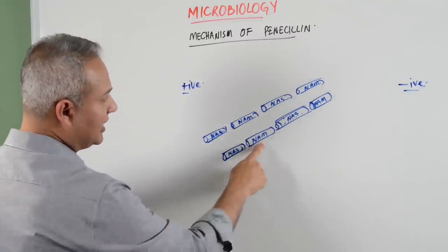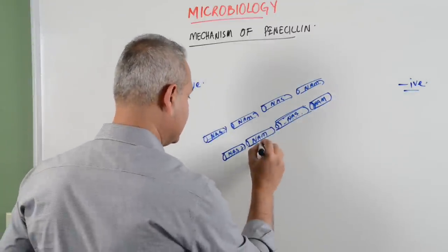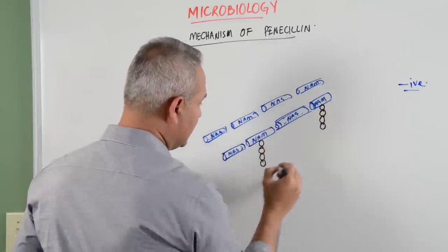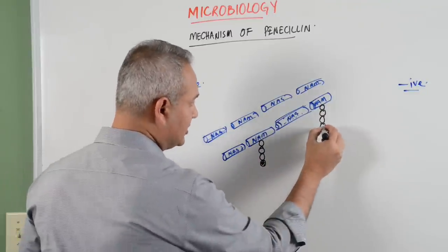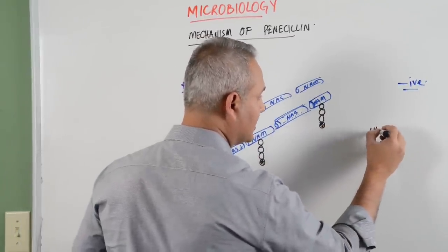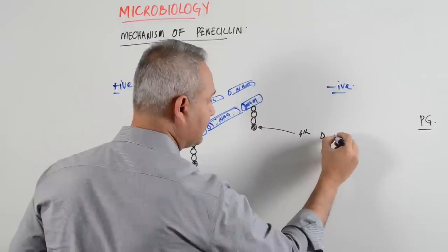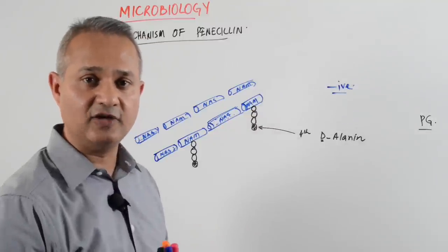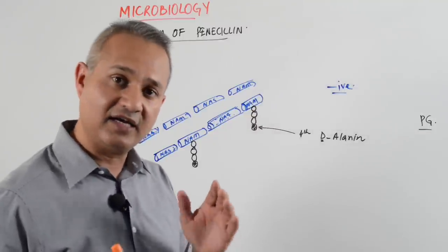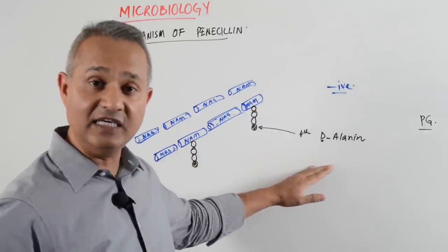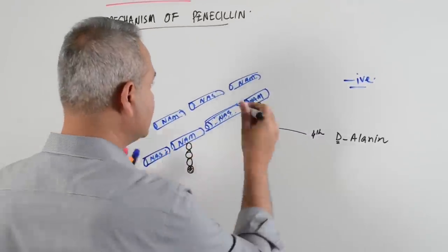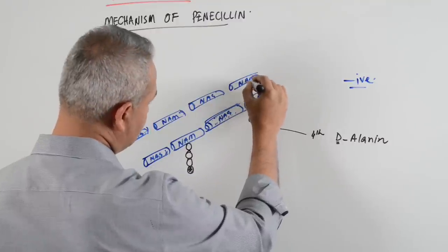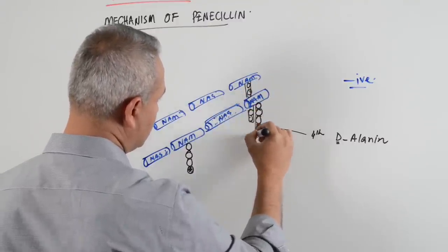With every NAM there are tetrapeptides attached - four amino acids. The fourth amino acid is always D-alanine. Remember that D- (dextro) is normally a synthetic structure not usually seen in organic substances. Organic substances normally are levo, but this is one place where you would see D-alanine. So we have two threads, each with protein structures attached.